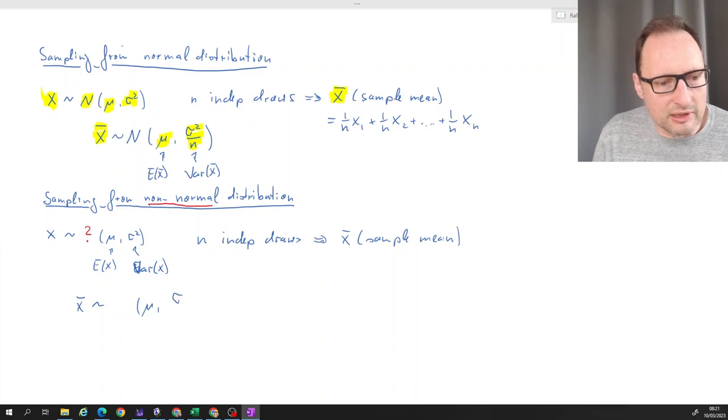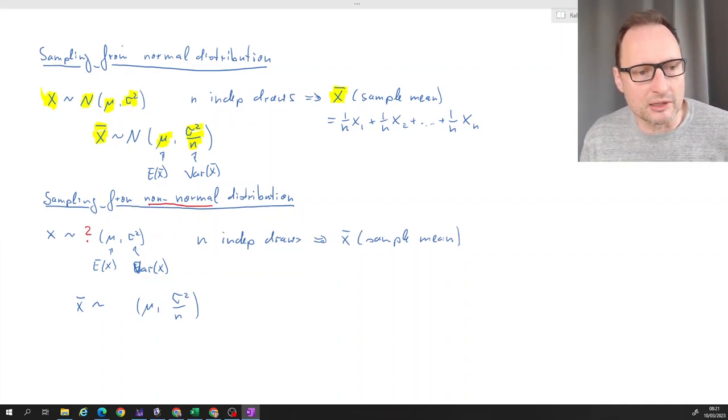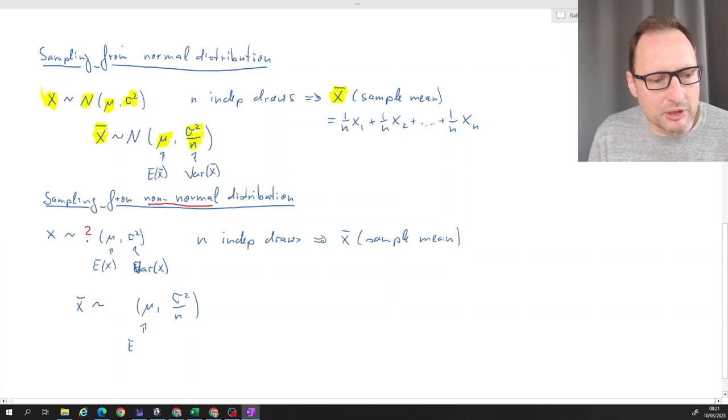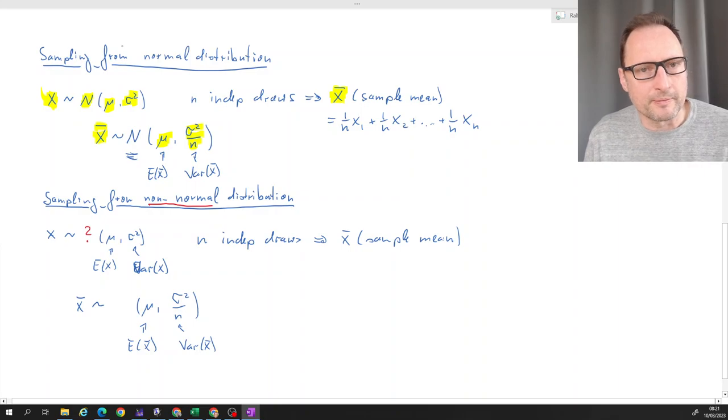We still know that its expected value and variances are μ and σ²/n respectively. That is still valid because when we derived the expected value of x̄ and the variance of x̄, we did not have to make this assumption that derivation was independent of that assumption.